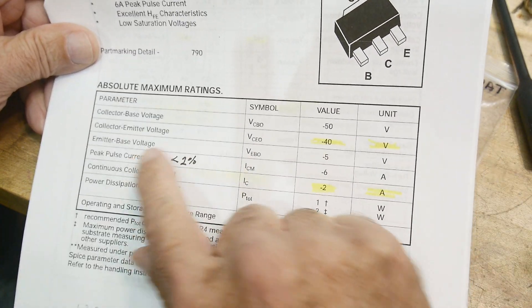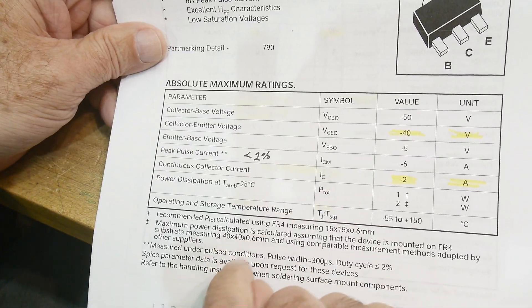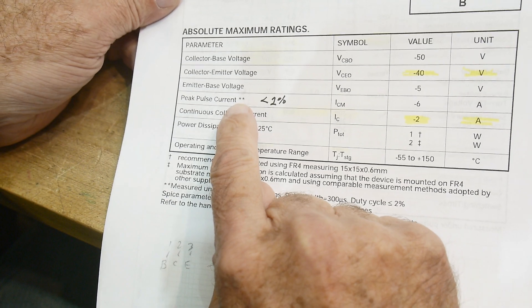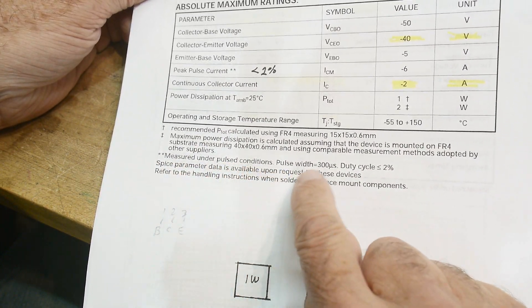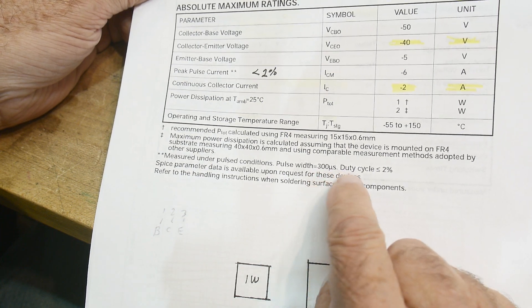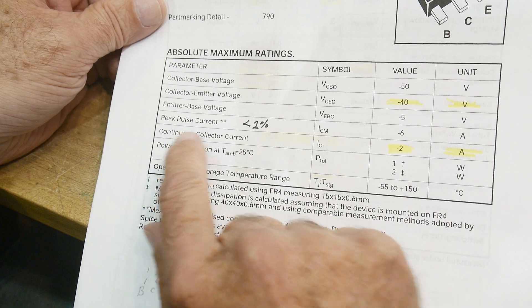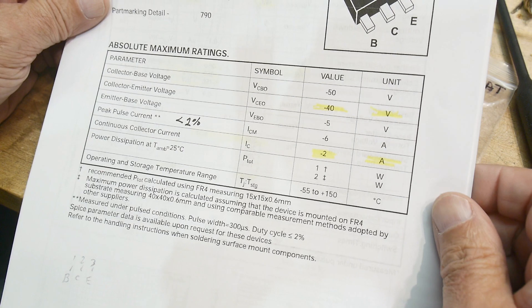It can do two amps or six amps. Six amps is pulsed, but if you read the datasheet it says it's less than two percent duty cycle. So that's down here, you see this little asterisk. You have to go down here and it says measured under pulse conditions, pulse width 300 microseconds and the duty cycle is less than two percent. But continuous DC it's good for two amps. Now is it really good for two amps? Well.